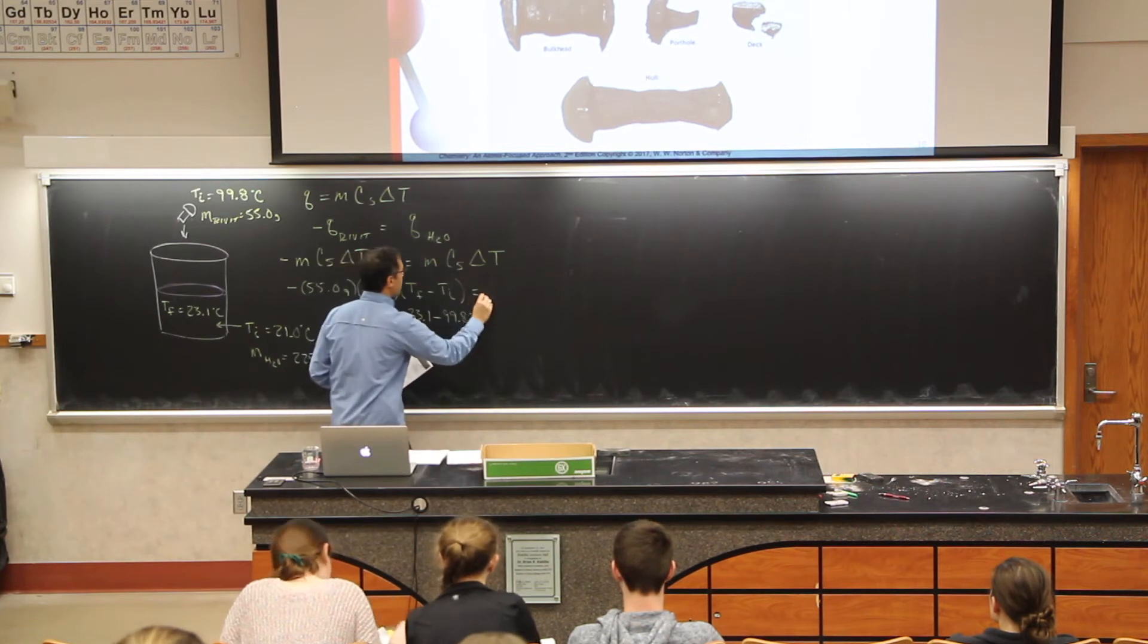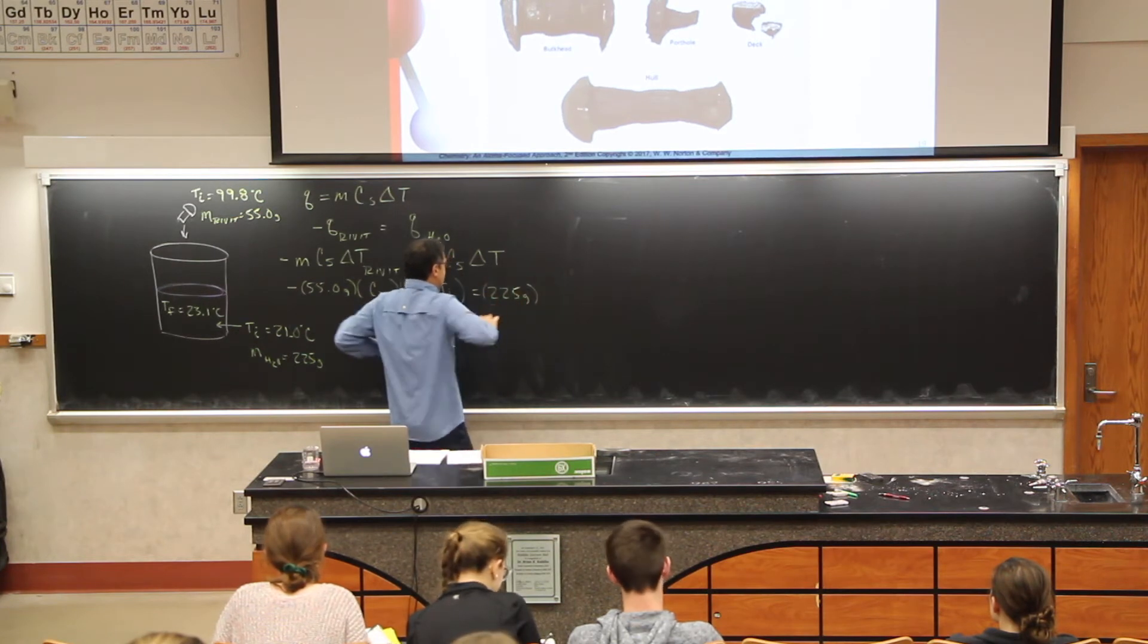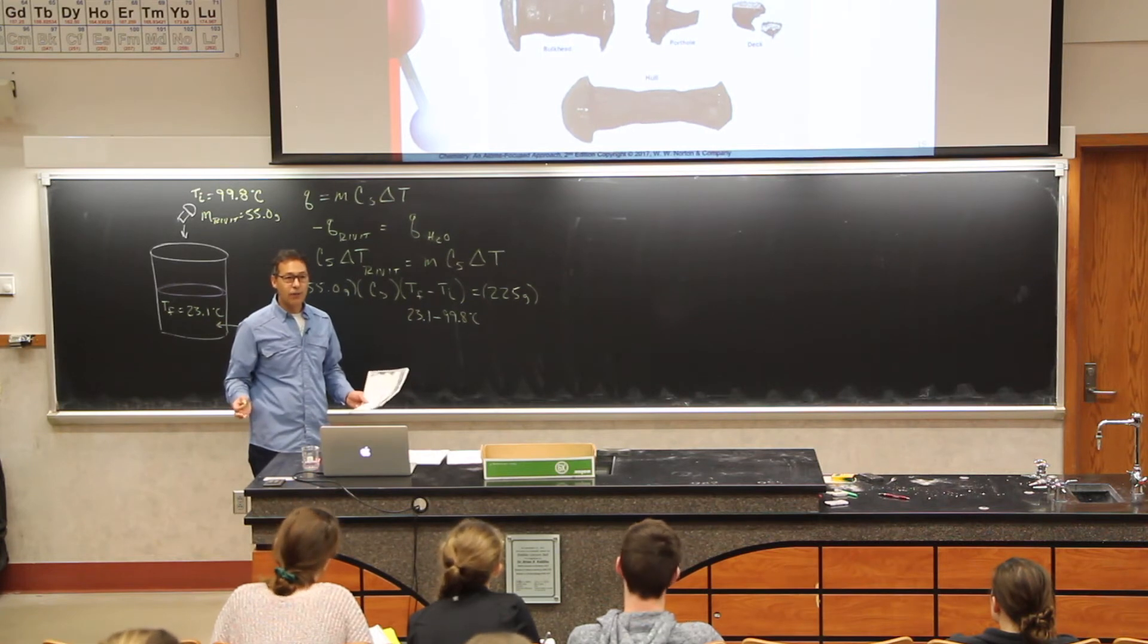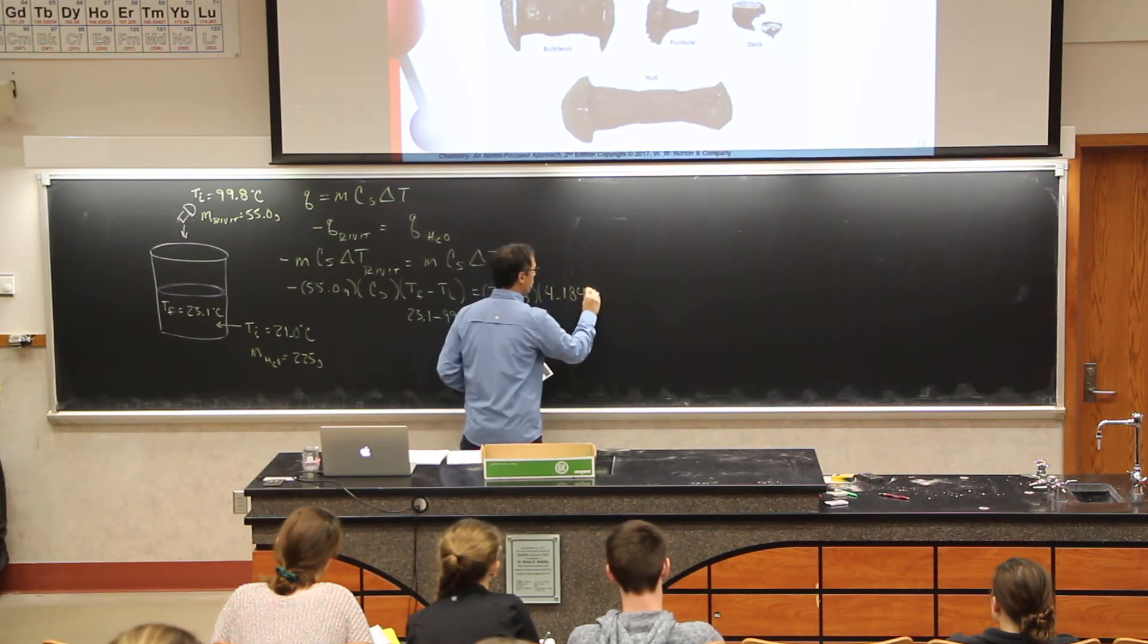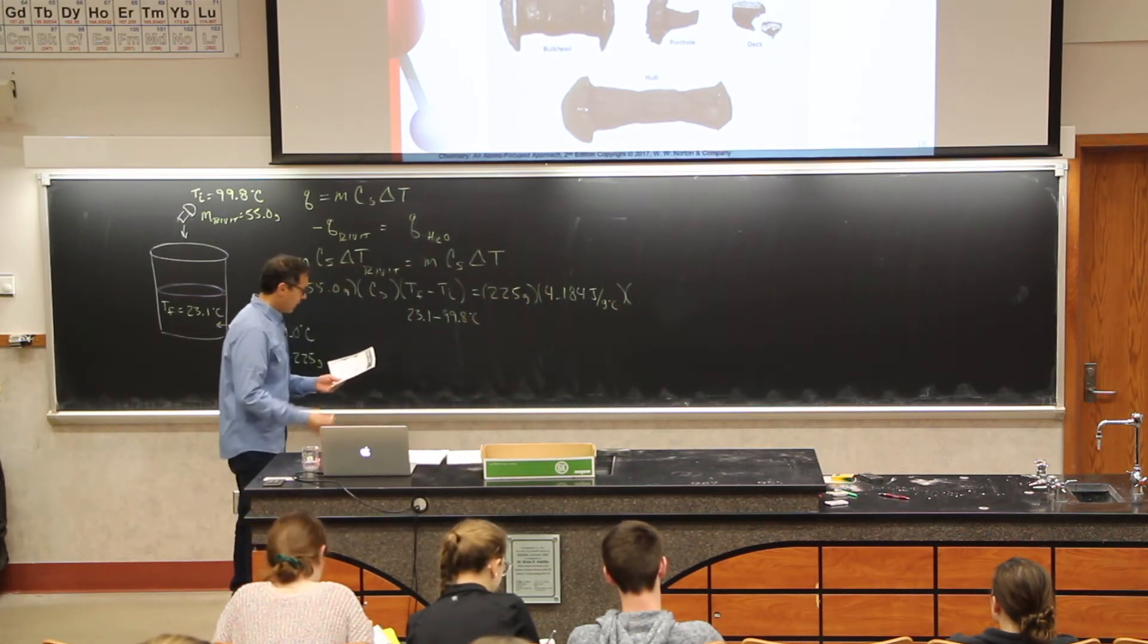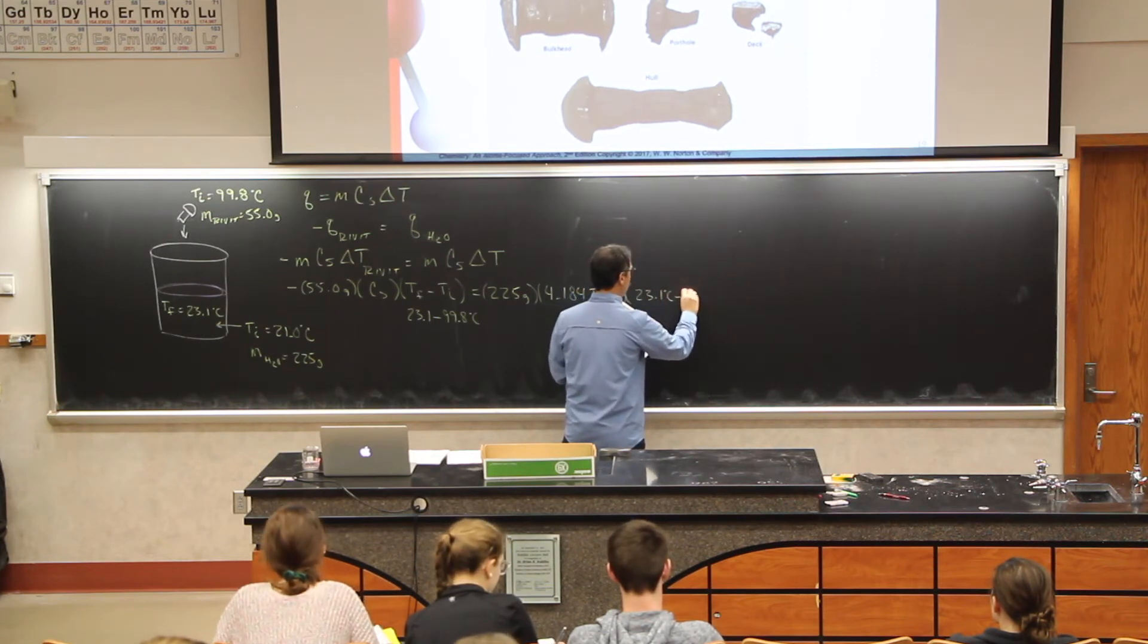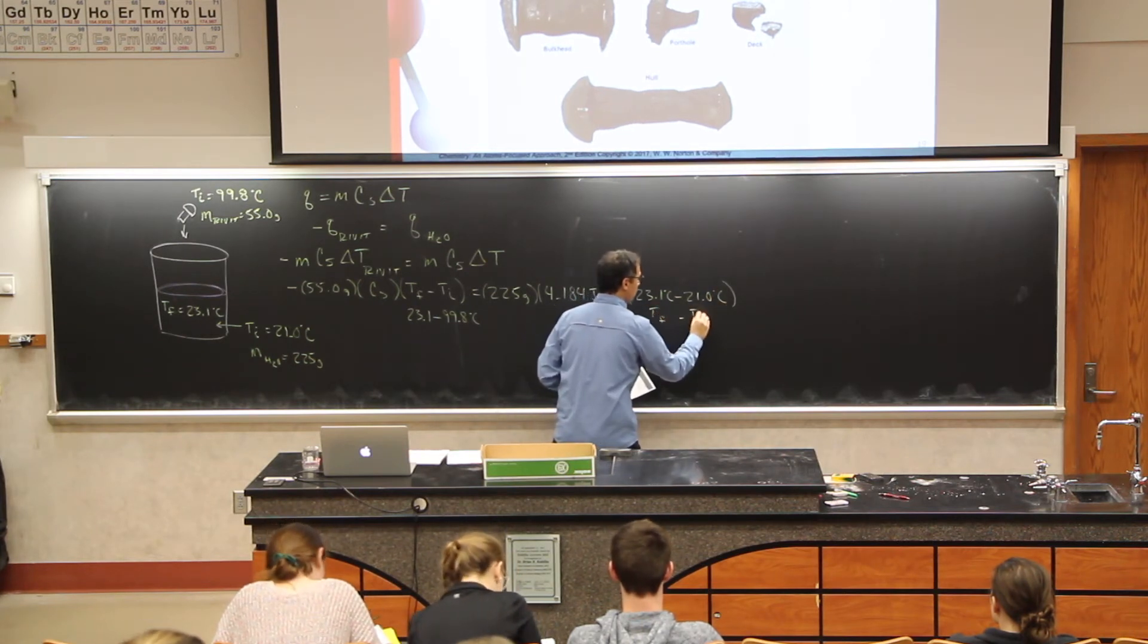And then on the other side here, I have our water. So that's 225 grams times the specific heat of water. Does it give us the specific heat of water? It doesn't. But that's a constant. That's 4.184. So that's 4.184 joules per gram degree Celsius times our change in temperature. And our change in temperature for our water is 23.1 degrees Celsius minus 21.0 degrees Celsius. That's temperature final minus temperature initial.